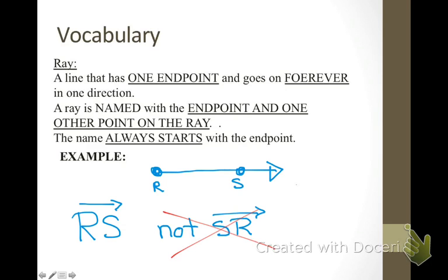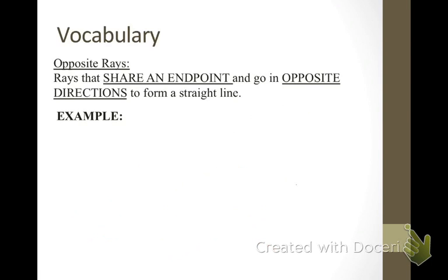This is a geometric figure where it is important that the order of the letters is correct. You start with R because that is your end point, and you say RS with a line drawn over it with only one arrow on it. You would not say ray SR because you must start with the end point.